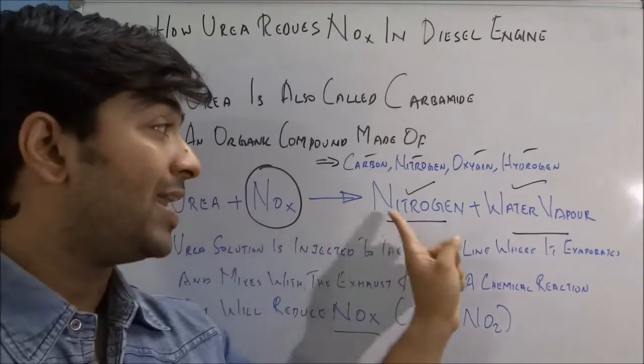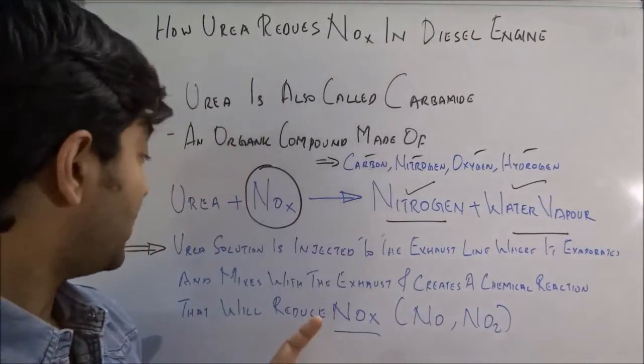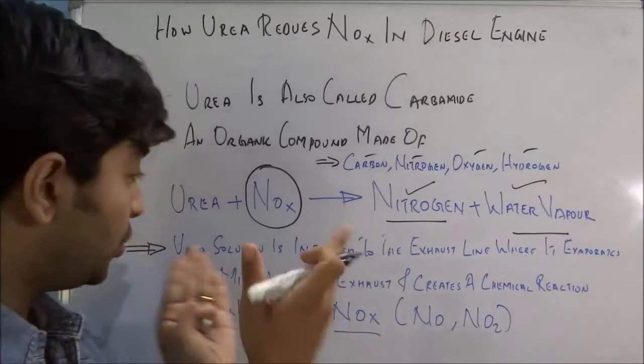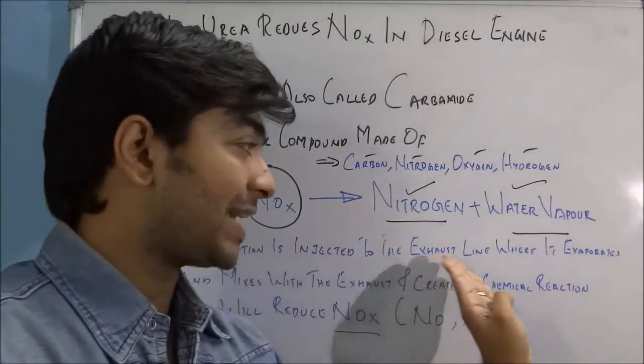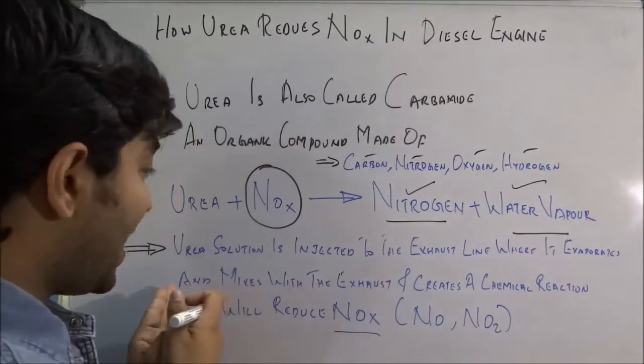How it has been done is that the urea solution is injected into the exhaust line where it evaporates inside the exhaust line and mixes with the exhaust.